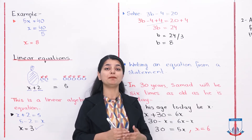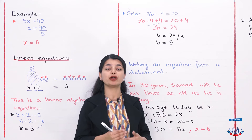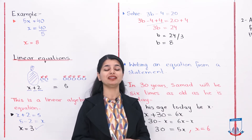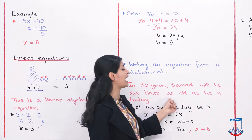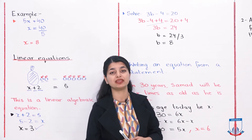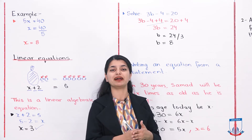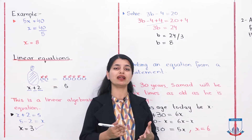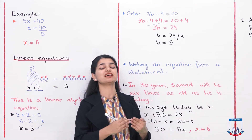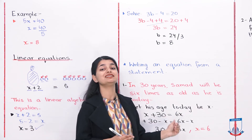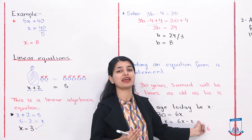There is another way — converting a statement into an equation. You will get questions where they give you a statement and you must form the equation yourself. For example: In 30 years, Summers will be 6 times as old as he is today. Find his age today. Let today's age be x. In 30 years his age will be x plus 30, and that equals 6 times today's age. So our equation is x plus 30 equals 6x.